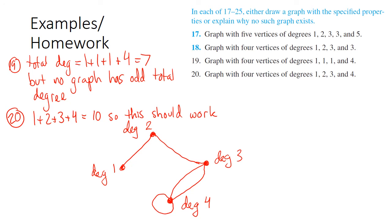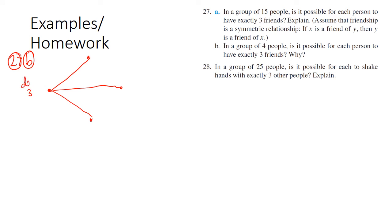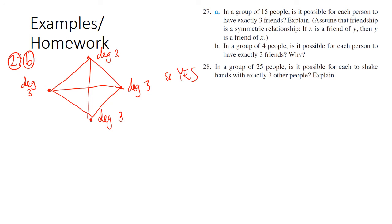Go ahead and pause the video and do problems 17 and 18, then check your answers in the back of the book. Now let's look at a more interesting type of problem — 27b and 28. In a group of four people, is it possible for each person to have exactly three friends? Drawing a graph of four people and connecting each to three others works — all four end up with degree three, so yes, it's possible.